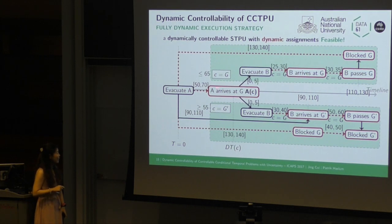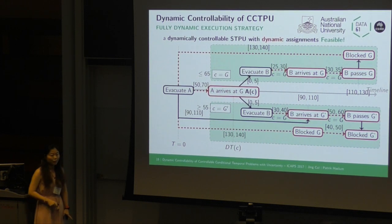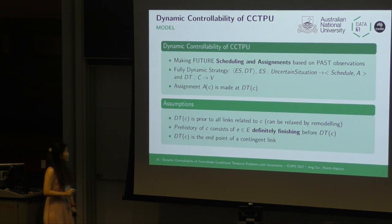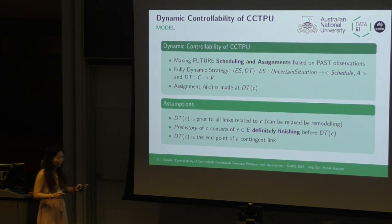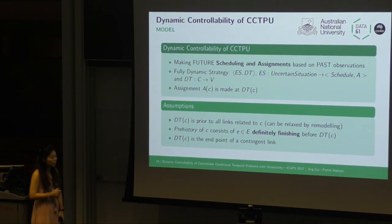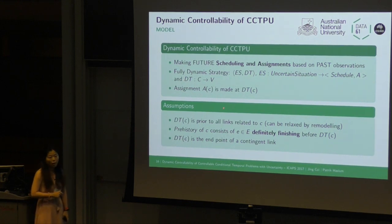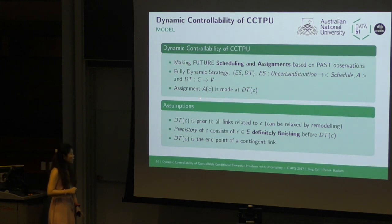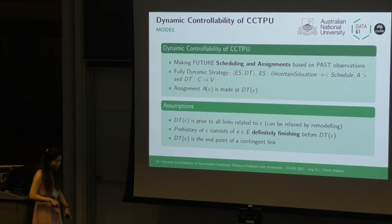The question is: how do we obtain the condition on prehistory that enables a fully dynamic strategy? In our model, we define dynamic controllability of CCTPU such that during execution, every decision — including scheduling and assignments of discrete variables — is based on past observations. There is a fully dynamic strategy including an execution strategy, which is a mapping from uncertain situations to schedule and assignment. The decision time points of discrete variables are also part of the strategy, and we introduce several simplifying assumptions.